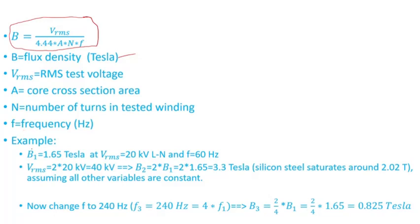Here's an example. Let's assume if you apply a voltage of 20 kV line-to-neutral and the frequency is 60 Hertz, the calculated flux density is 1.65 Tesla. Now, if you increase the voltage—like I was saying here for distribution...